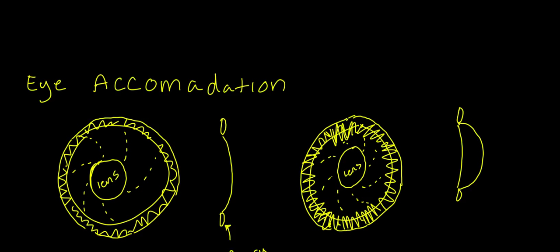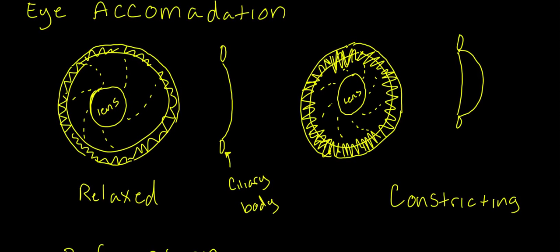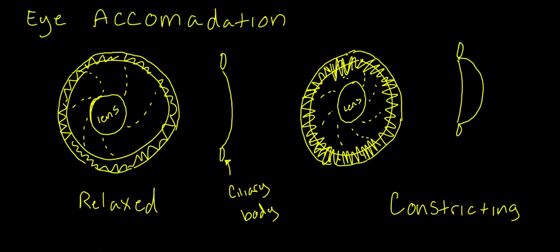Okay, this is continuing on the special senses and we're still working with the eyes. I'll try to keep this one super short. With eye accommodation, all it's saying is the ability for the eye to relax and constrict.